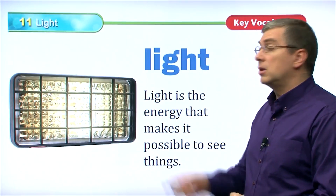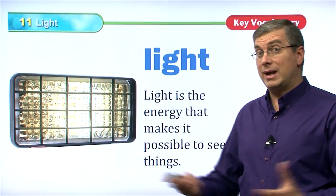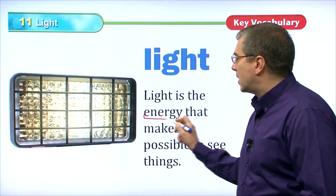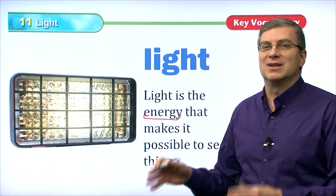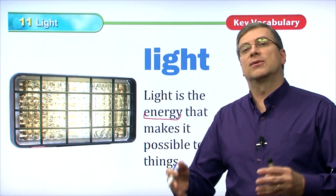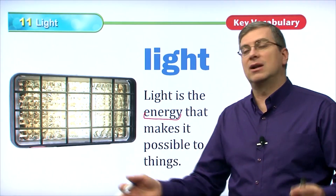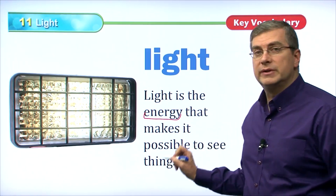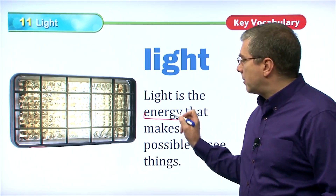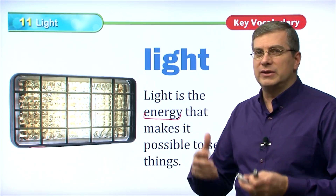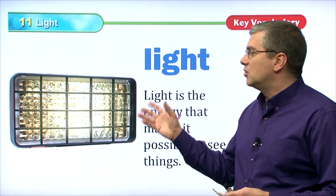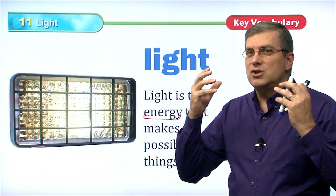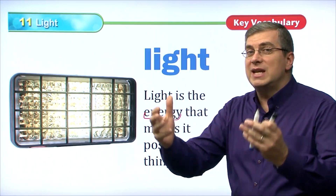First of all, let's talk about light. What is light? Light is the energy. We're talking a lot about energy in this book. There are many different types of energy. Light is the energy that makes it possible to see things. Remember, energy is something that causes change. So if we see with this energy, it allows us to see things.